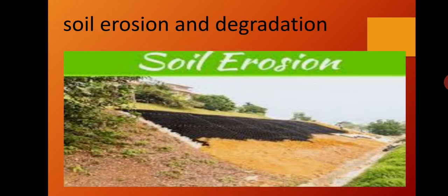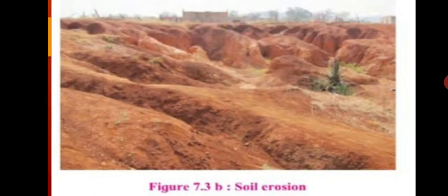Let us study about soil erosion and degradation. The top layer of soil gets removed due to wind or water — this means the soil gets eroded. Running water, climate, and diversity in physiography are the reasons for soil erosion. The soil quality may also get lower due to certain reasons — this is called degradation of soil.